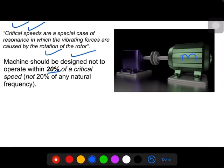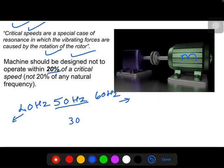Machine should be designed not to operate within 20% of critical speed. For example, if the natural frequency of the machine is 50 Hertz, then it should not operate within plus or minus 20%. If you consider 40 Hertz and 60 Hertz, means the machine should not operate between 40 and 60 Hertz. If we consider RPM, 50 Hertz is 3000 RPM, 40 Hertz is 2400, and 60 Hertz is 3600 RPM.